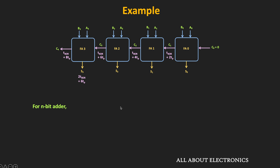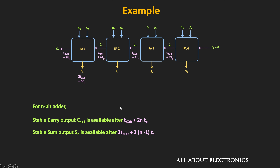In general, for an N-bit adder, the valid final carry output is available after Txor + 2N×Tp, and the valid sum output is available after 2×Txor + (2N-2)×Tp. For N = 4, the carry output is available after Txor + 8×Tp = 20 + 80 = 100 ns, and the sum output is also available after 100 ns. So the worst-case carry propagation delay for this four-bit adder is 100 nanoseconds.